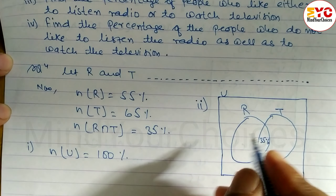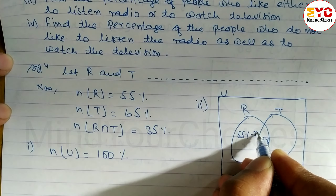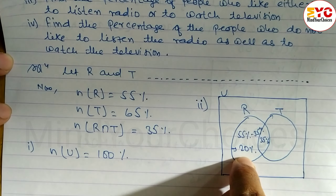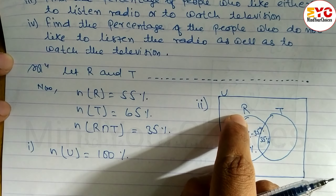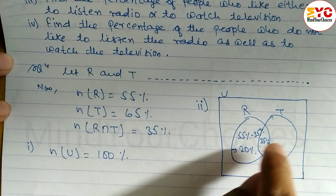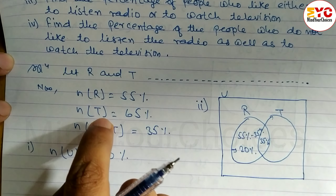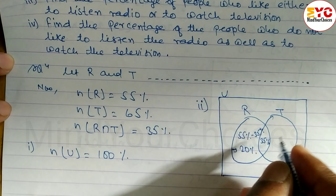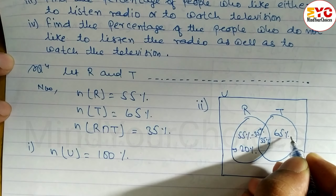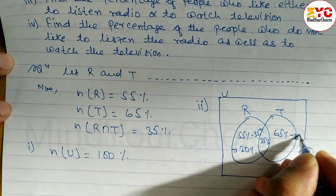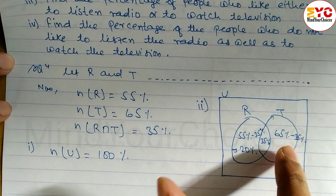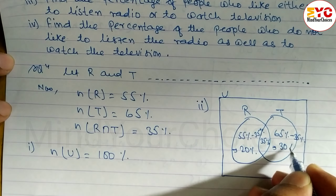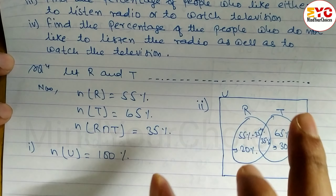For only radio: n(R) = 55%, minus the intersection 35%, gives us 20%. So 20% of people like to listen to radio only. For only television: n(T) = 65%, minus 35% gives us 30%. So 30% of people like to watch television only. We fill these values in the respective parts of the Venn diagram.